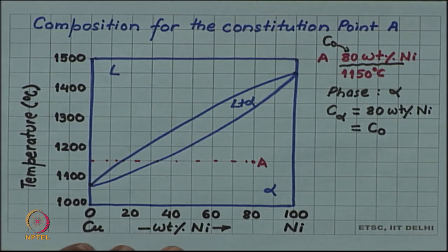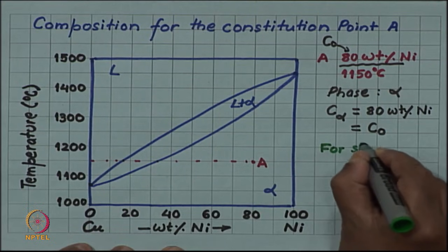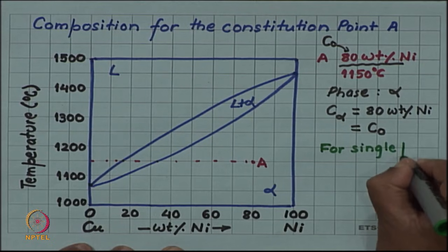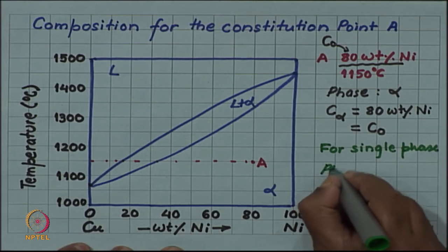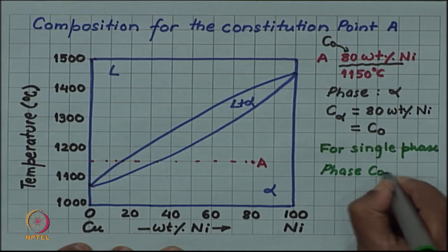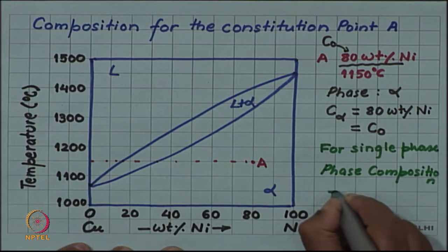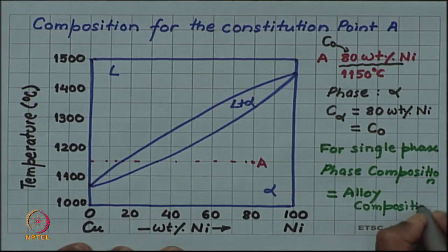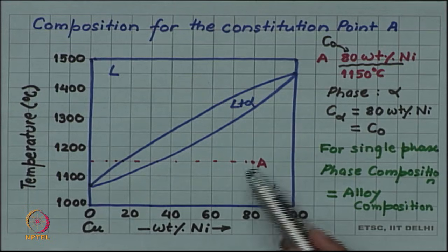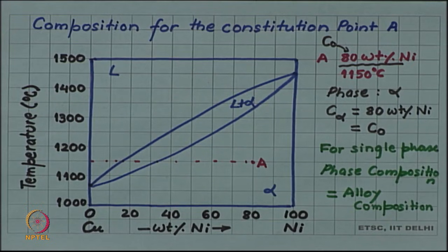So for single phase, this will be a general rule: the phase composition is equal to the alloy composition. This is for the obvious reason that the entire alloy consists of the same phase, so whatever percent nickel is in the alloy is also present in the given phase alpha.